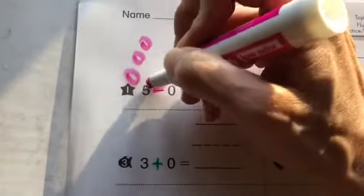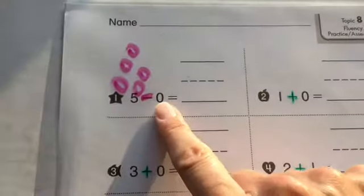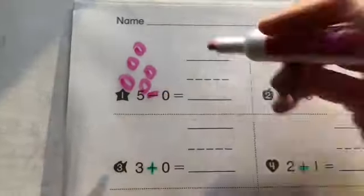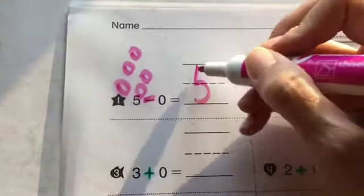So we have one, two, three, four, five. How many do we take away? Zero. So we still have five. Five minus zero is five.